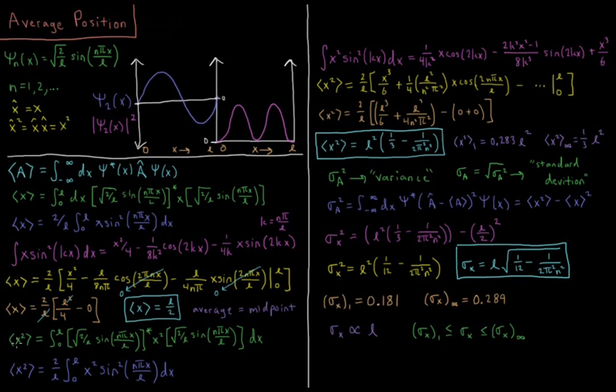Now we're going to compute the average value of x squared. This is going to be slightly different than squaring this value, and that's going to help us calculate the uncertainty in x as we'll see in a minute. Similar kind of setup. We have integral 0 to l, psi star, operator is x squared now, and psi dx. Similar logic gets us to 2 over l integral 0 to l, x squared sine squared n pi x over l dx.